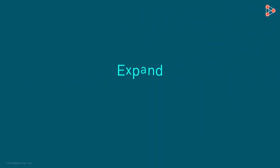Today we will be using simple geometry to expand the trigonometric identities sine alpha plus beta and cosine alpha plus beta. Let's begin.